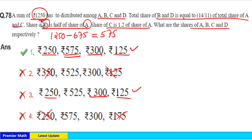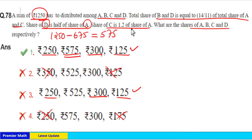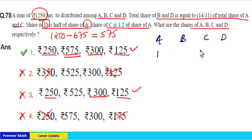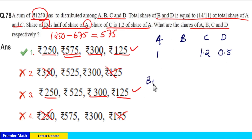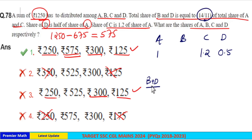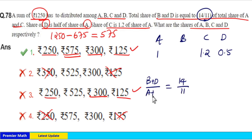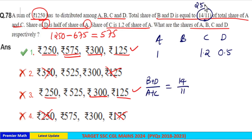If you don't have options, you need to find it using the ratio method. Taking a as 1, c should be 1.2, and d should be half of a, that is 0.5. The share of b and d equals 14/11 of the total share of a and c, which means (b + d) / (a + c) = 14/11, and 14 plus 11 equals a total of 25 parts.